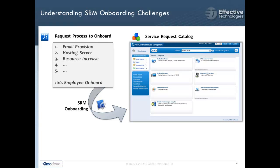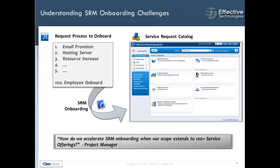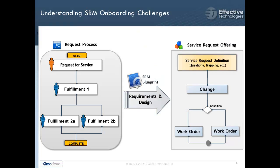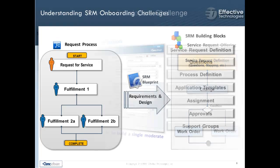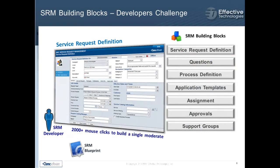One of the most significant challenges about deploying the SRM catalog is how do I accelerate my onboarding effort? When we look at the detailed request process, it's a matter of figuring out the request requirements in the design and translating it into the actual offering. Handing this offering off to a developer quite often will involve 2,000 plus mouse clicks because of the numerous objects that are involved. This can be very time-consuming per service request offering.